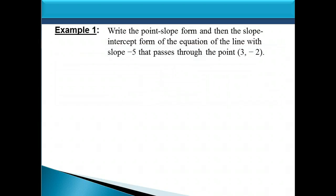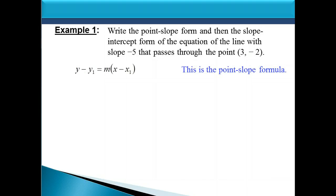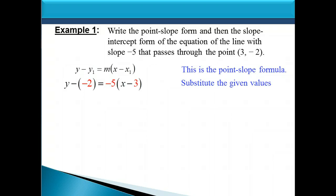Let's look at an example of how we can use this formula. We want to write the point-slope form and then the slope-intercept form of the equation of a line that has a slope of negative 5 and passes through the point 3, negative 2. Here's the point-slope formula again. We simply need to replace m, x1, and y1 with their respective values — replacing y1 with negative 2, m with negative 5, and x1 with 3.